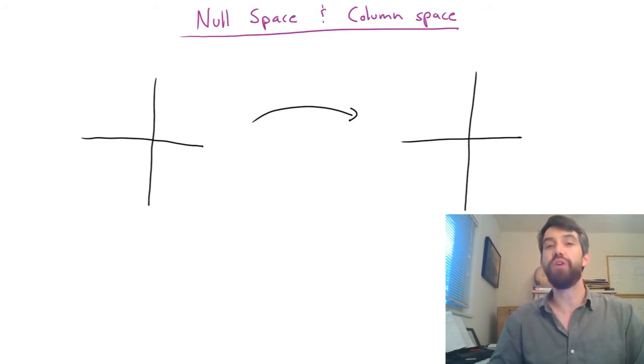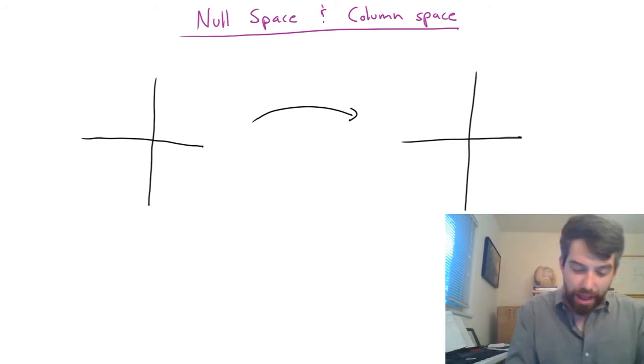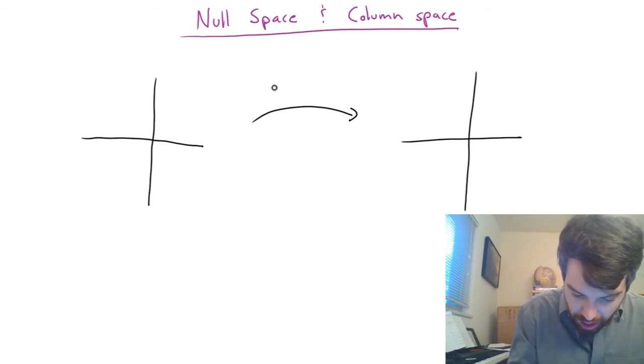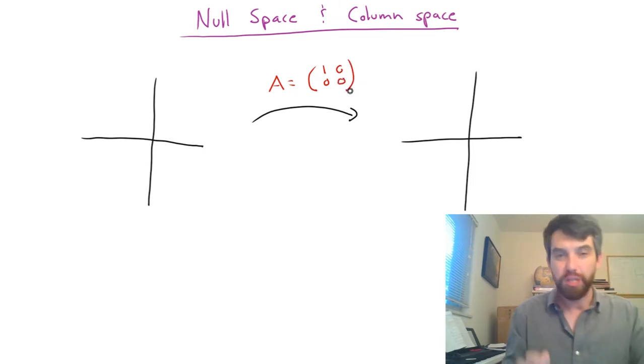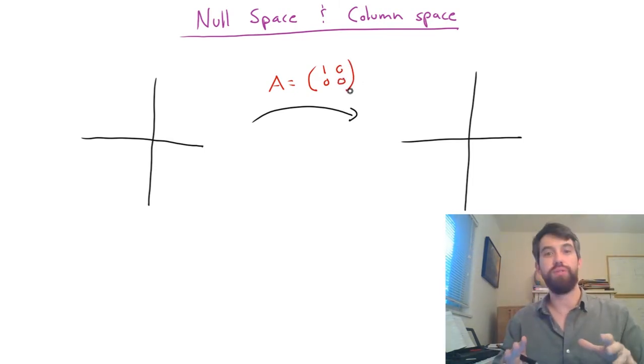So I want you to imagine that you've got some transformation. And I'm going to take a particular transformation which is going to have the defining matrix A being 1, 0, 0, 0. So before we even talk about the null space or the column space, let's just sort of figure out how this particular transformation works.